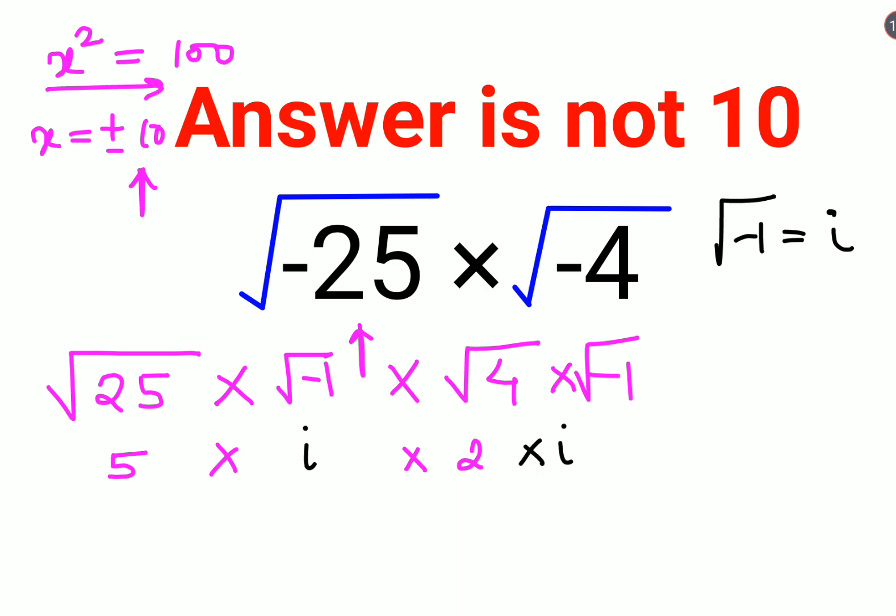So now what you have is 5 into 2 that gets you 10 into i into i, which gets you i square. So understand root negative 1 value is i. So what will be i square? Squaring both sides, i square will be negative 1.